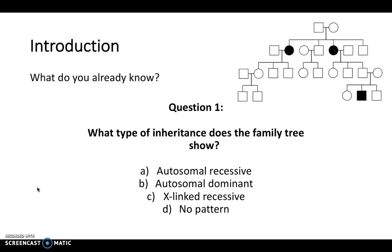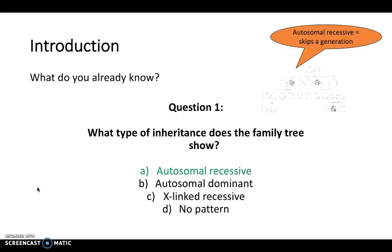At this point, you can pause the video to give yourself more time to answer the questions, but we're going to zoom through it here because these videos are designed to be short. So the answer to this question is autosomal recessive, and the reason for this is because this inheritance pattern shows skipping a generation, and we'll discuss this a little bit more later on in the video.